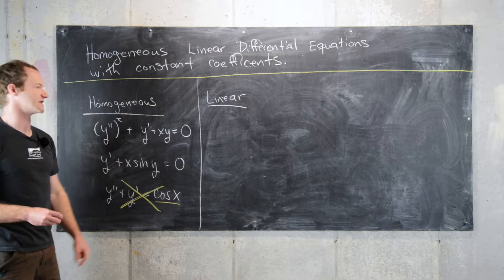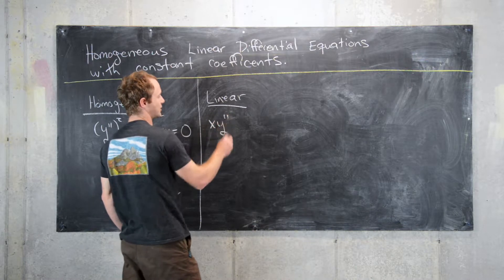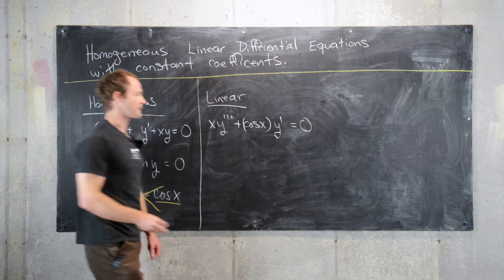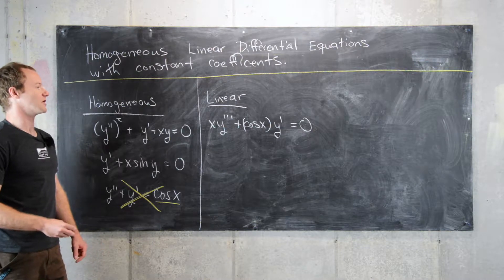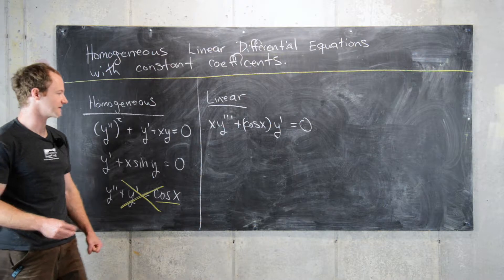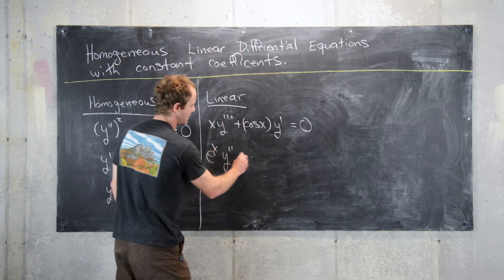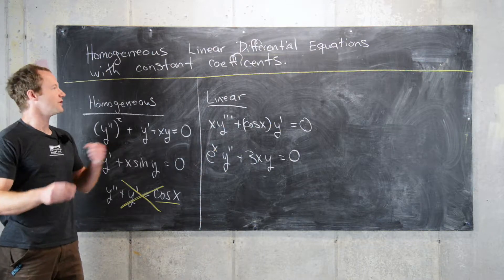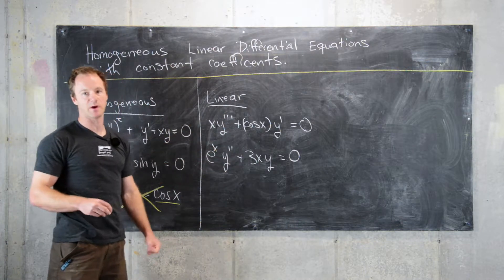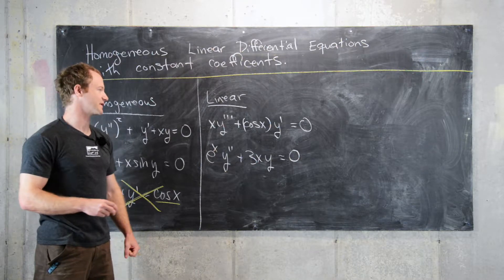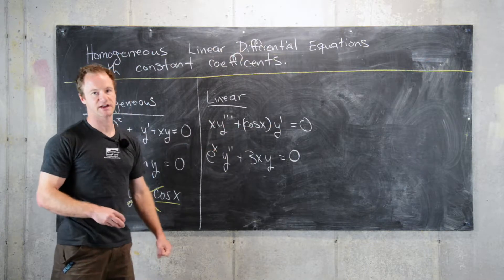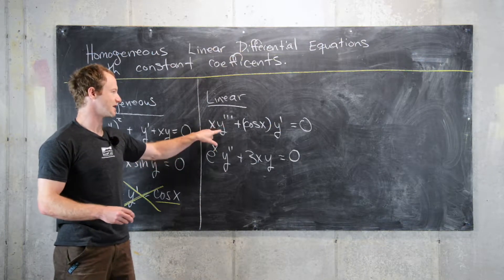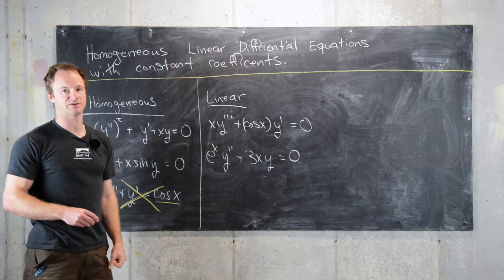An example of something that's linear and homogeneous would be x·y''' + cos(x)·y' = 0. Another example is e^x·y'' + 3x·y = 0. You have to be careful: linear always refers to what's happening with the dependent variable and its derivatives, not the independent variable. So cos(x) and e^x are nonlinear in x, but we're talking about linearity in y.